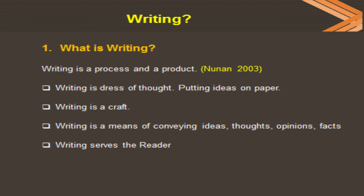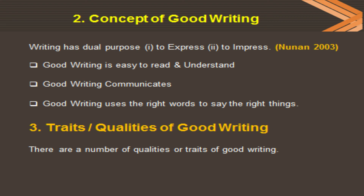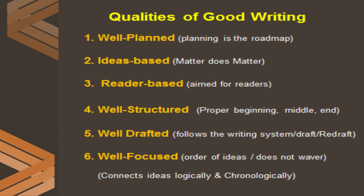Regarding the concept of good writing: good writing has a dual purpose — first, expression, and second, to impress. Good writing is easy to read and understand, it conveys its message to others, and it uses the right words with the right ideas. This combination makes writing good. Among the qualities of good writing: it should be well organized, it should contain ideas, and its focus should be on the reader.